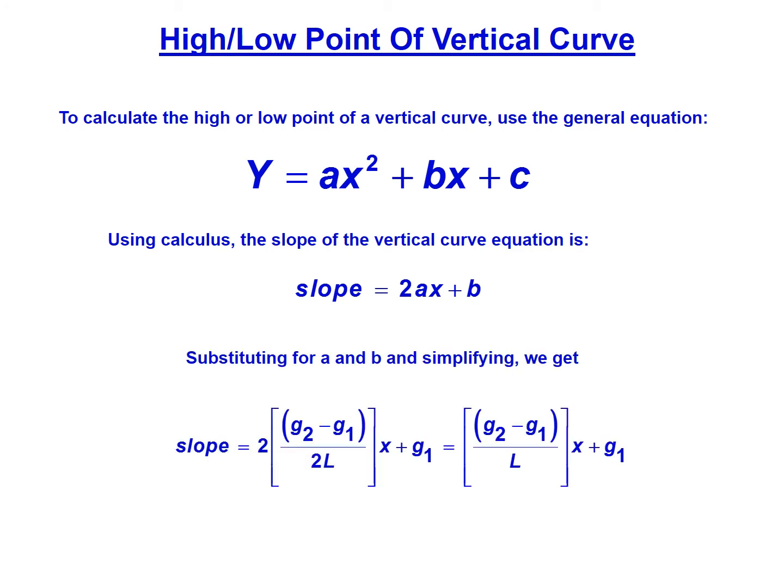We can substitute in our specific relationships for a and b. So the term a is g2 minus g1 over 2 times L, and b is g1 in our vertical curve specific equation. So the slope equals 2 multiplied by g2 minus g1 over 2 times L, multiplied by x plus g1.